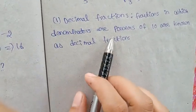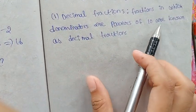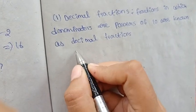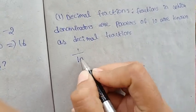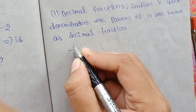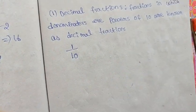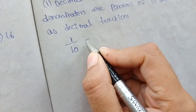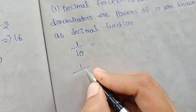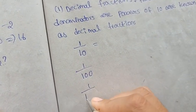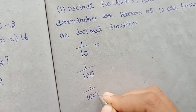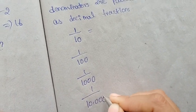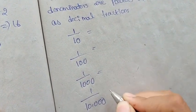Fractions in which denominators are powers of 10 are known as decimal fractions. That means 1 by 10, 1 by 100, 1 by 1000, 1 by 10,000. So these are decimal fractions.